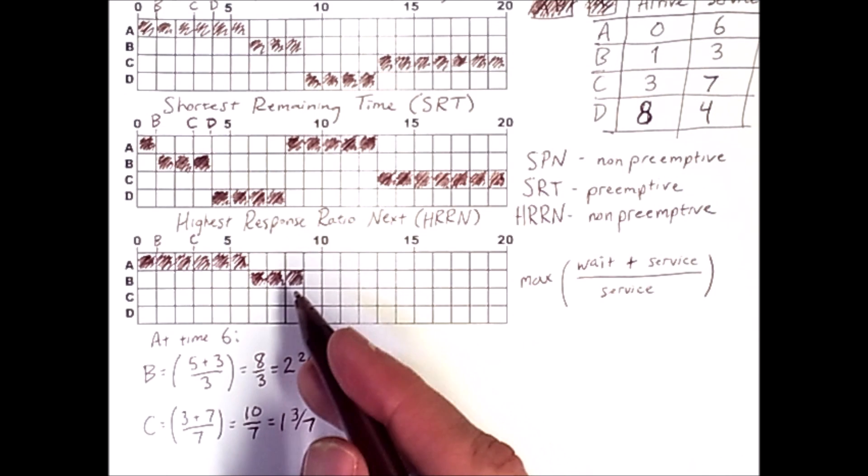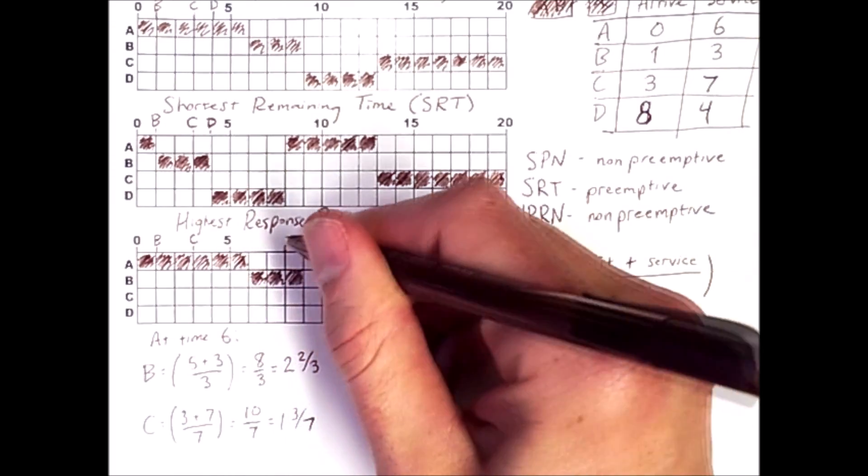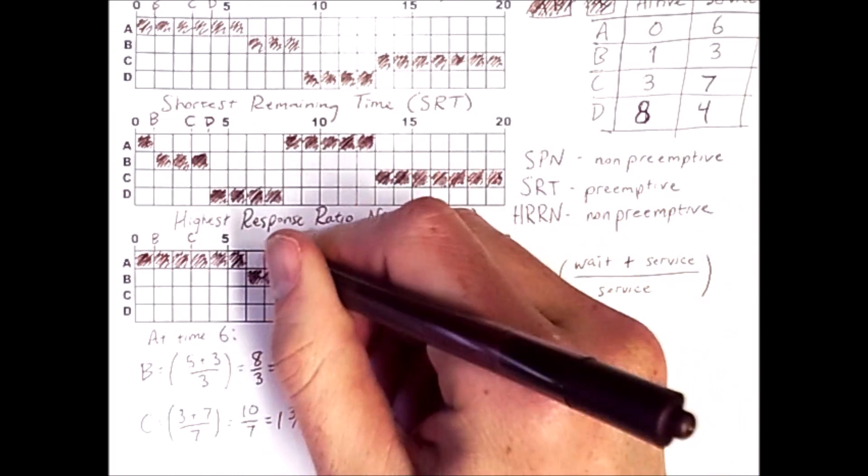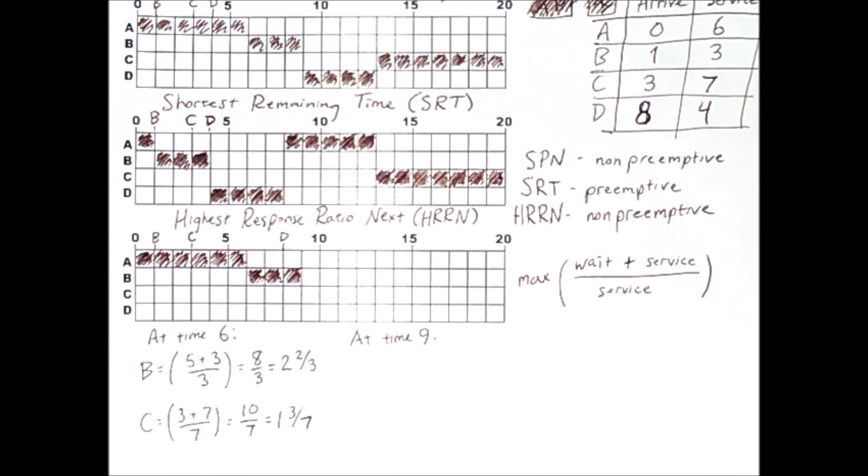At this point, we have to make another decision about which process will run because at time 8 is when D arrived. We're currently at time 9 and we have to decide whether D or C gets to run next. So we'll carry out the same calculation we did here but for those two processes.